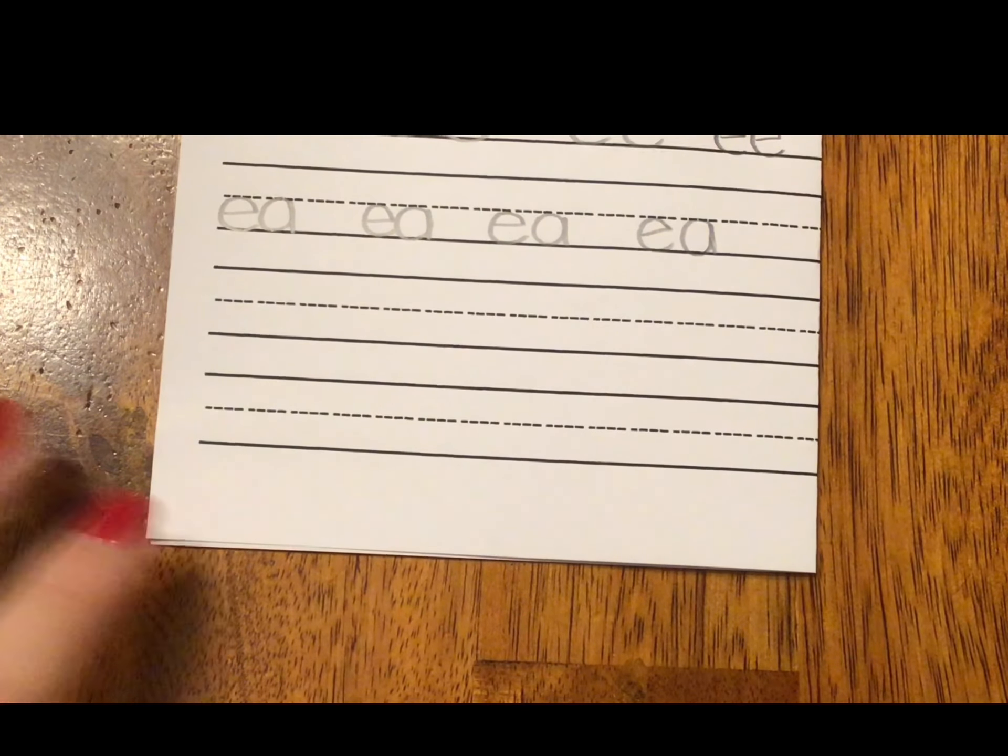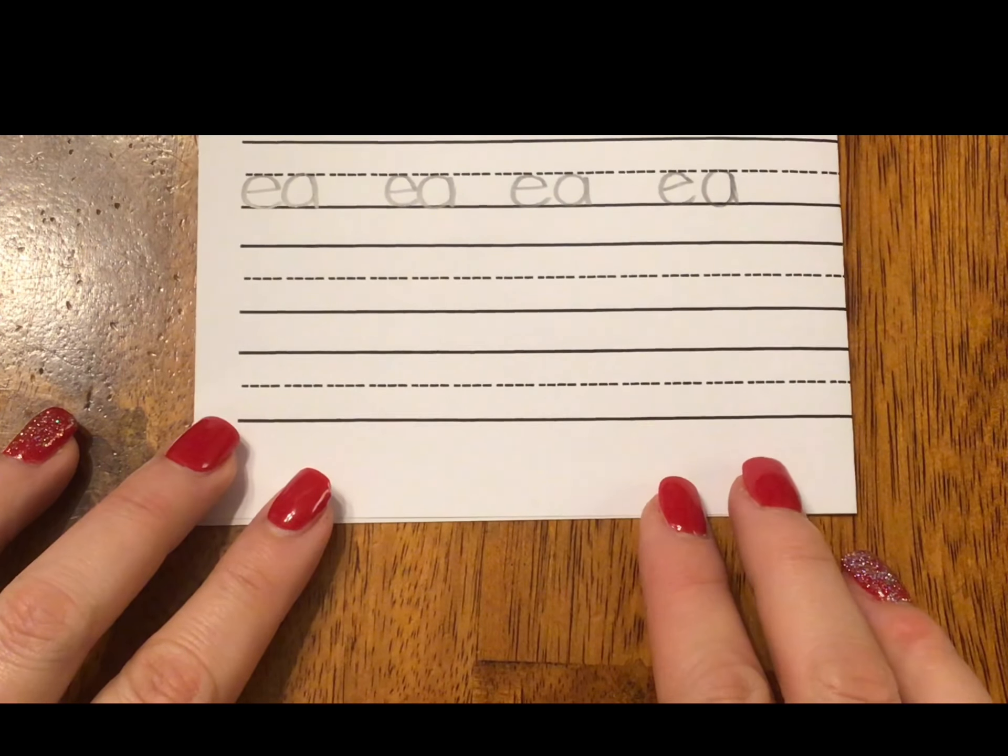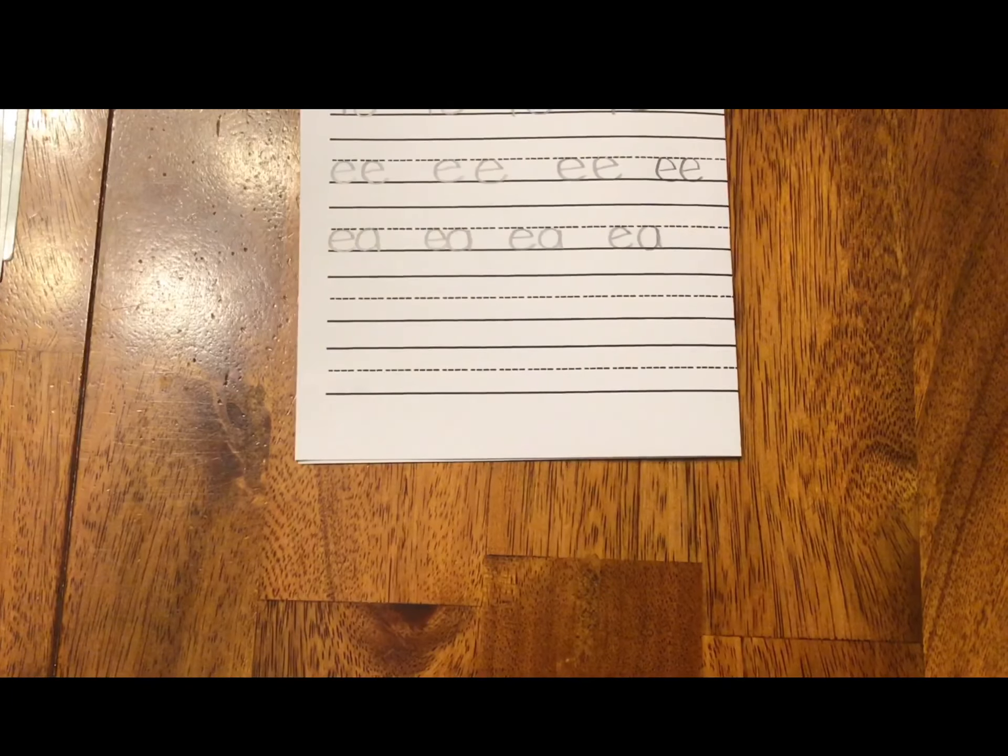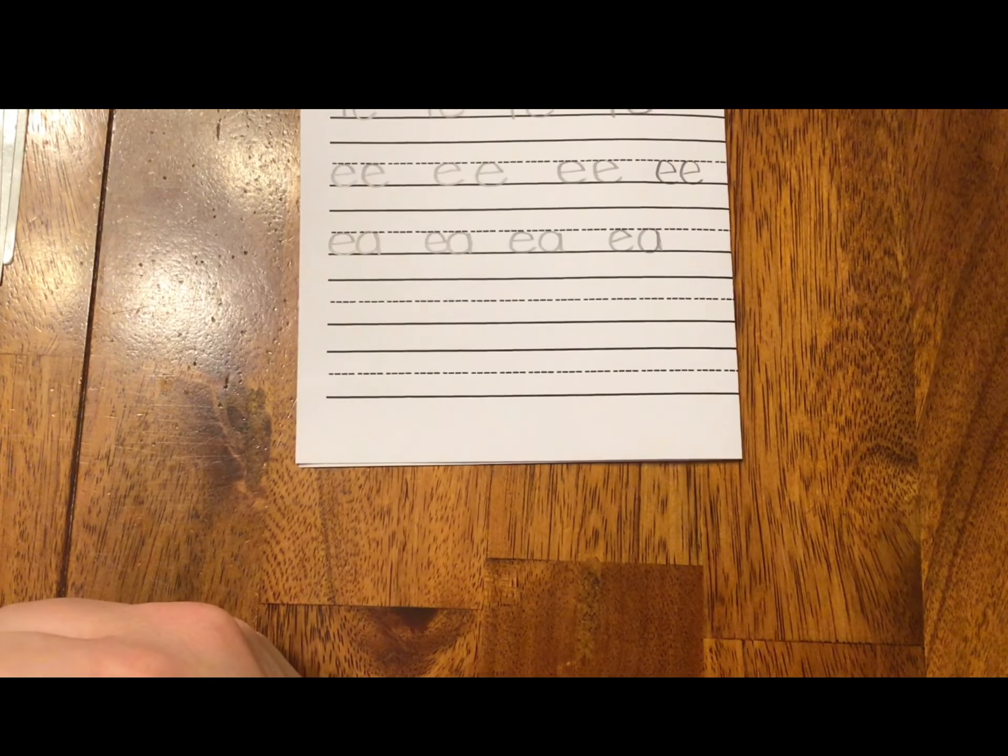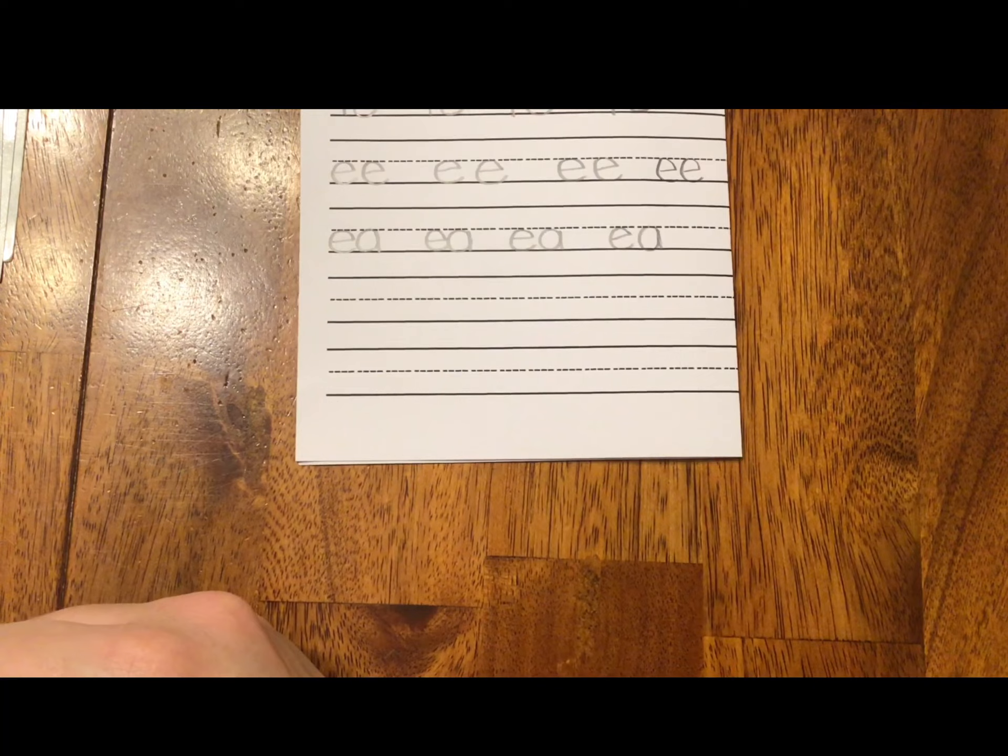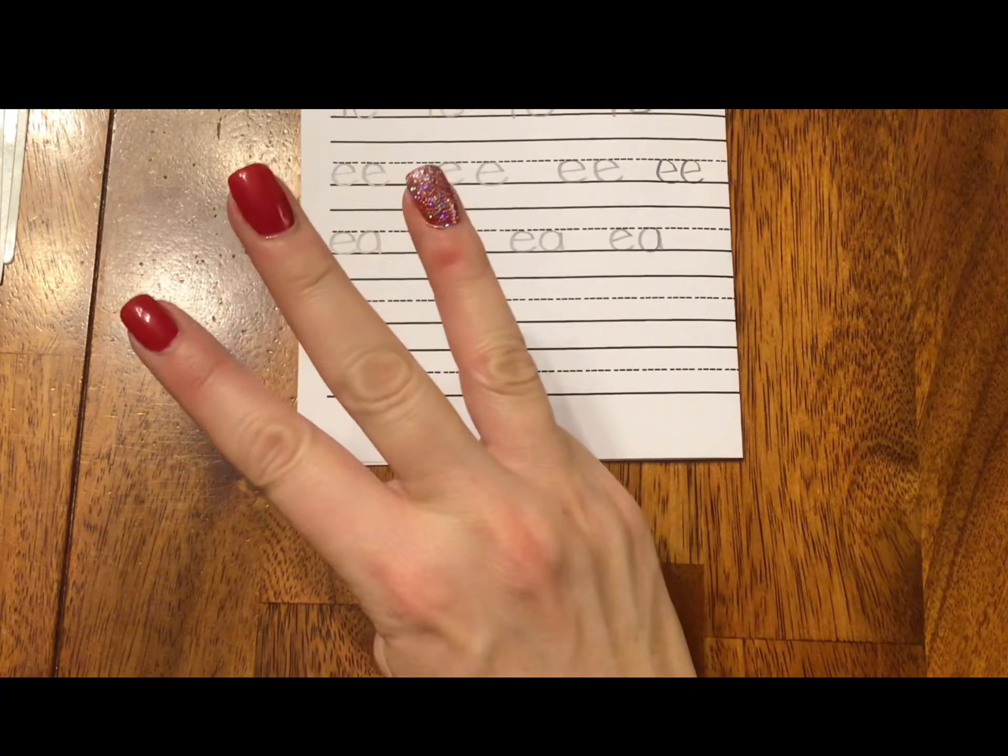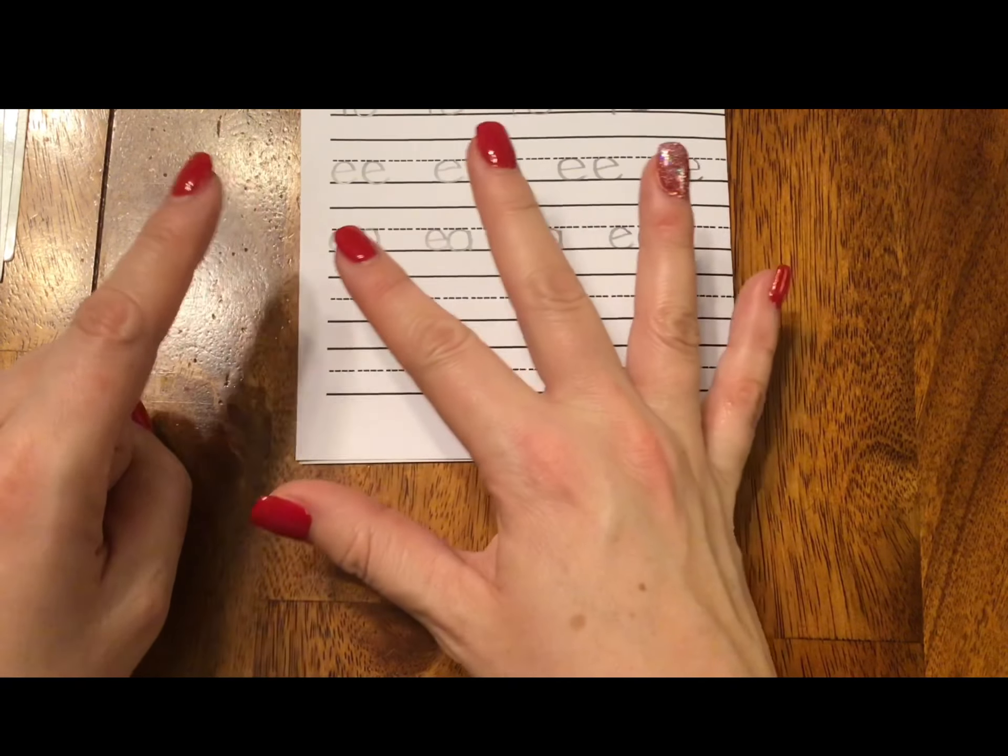We are about to work on our sentence for today. Our sentence says: The bow is on my toe. Again, it's a silly sentence. The bow... Say it with me. The bow is on my toe. Let's count it out. The bow is on my toe. That is 6 words.